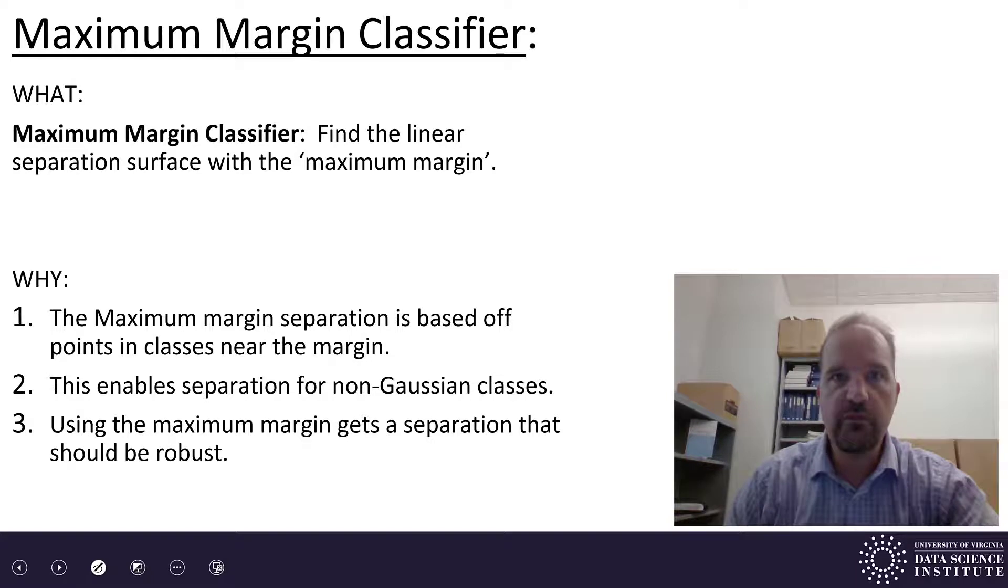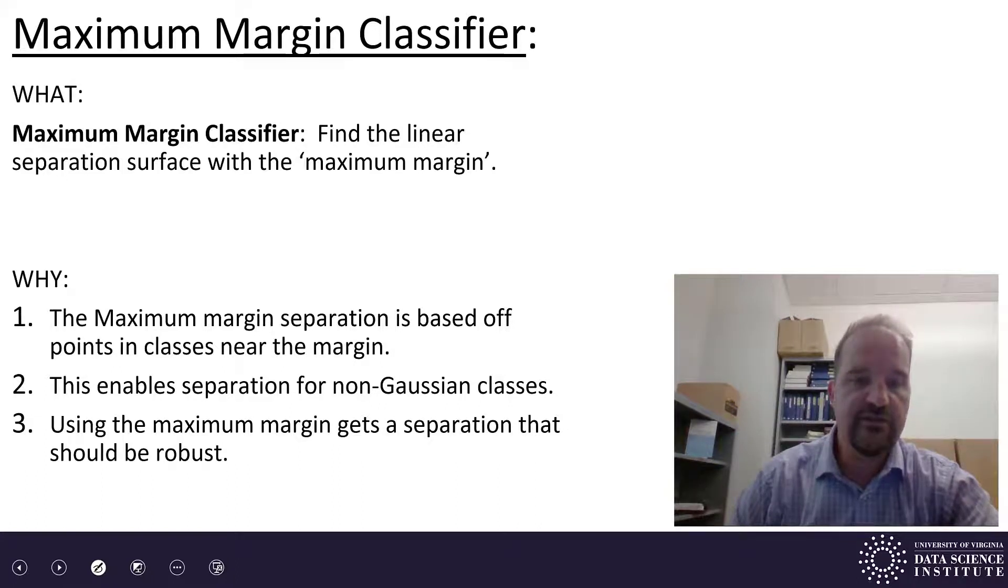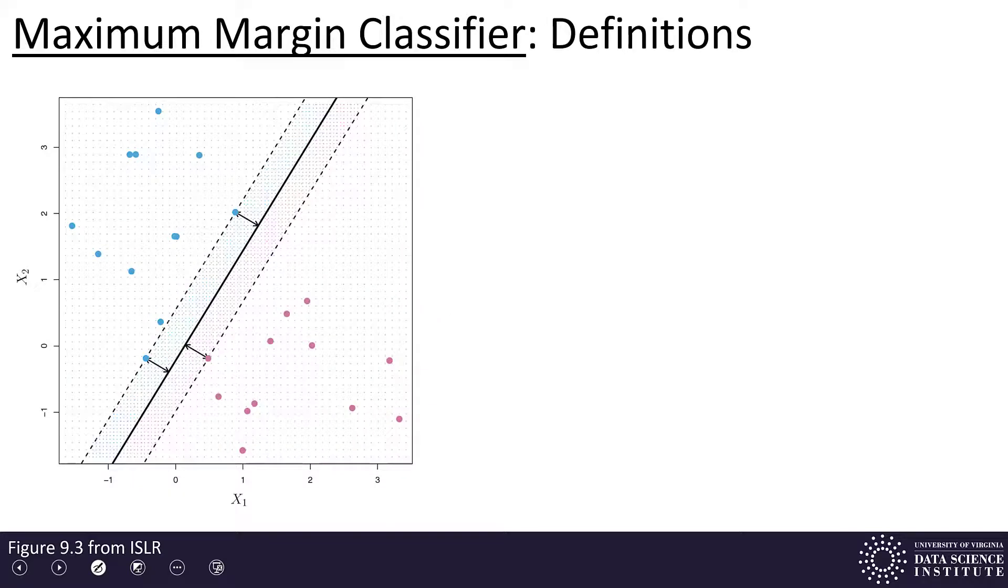And using this maximum margin, it's a separation that should be robust. We talked about if some of those points have a little bit of error in them, they're not going to jump across the separation plane unless that error is at least as large as the margin.